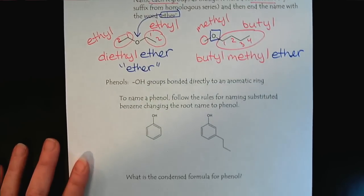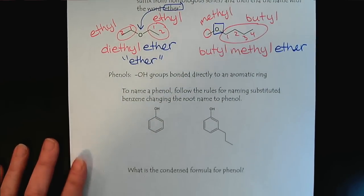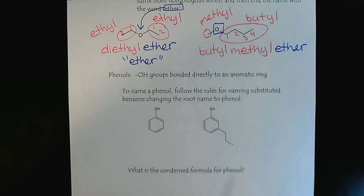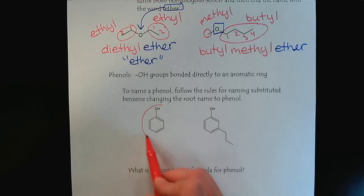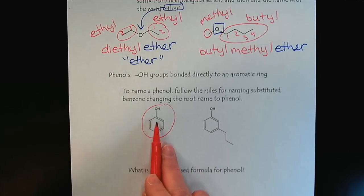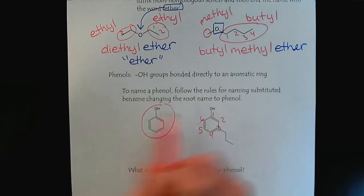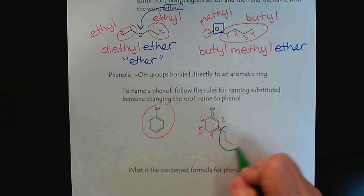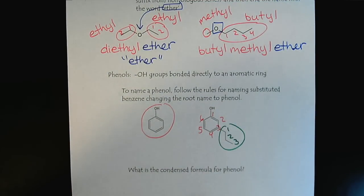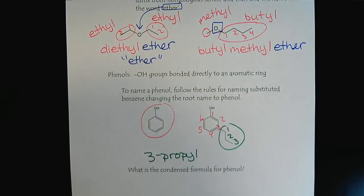And then phenols. We'll briefly go over those. Remember that the OH group is bonded directly to the benzene ring. This would be given the one position, two, three, four, five, six. So we would have a three carbon branch. So we would describe this molecule as 3-propyl phenol.